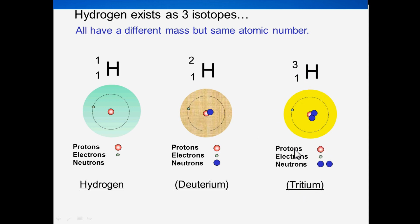Tritium has one proton, one electron, and two neutrons.